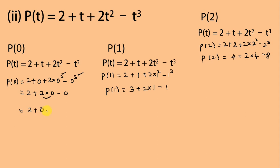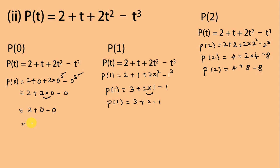For p(2): 2 + 2 + 2×2² - 2³ = 2 + 2 + 2×4 - 8 = 2 + 2 + 8 - 8. We multiply: 2 + 0 = 2, so p(0) = 2. For p(1): 3 + 2 - 1 = 4, so p(1) = 4. For p(2): 2 + 2 + 8 - 8 = 4, so p(2) = 4. This completes the second part.